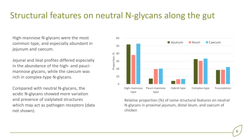Compared with neutral N-glycans, the acidic N-glycans showed more variation and presence of sialylated structures which may act as pathogen receptors.